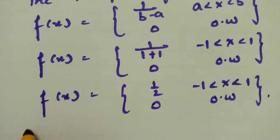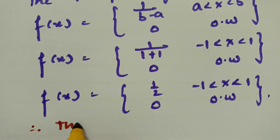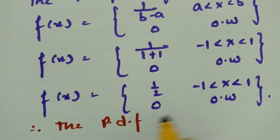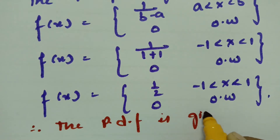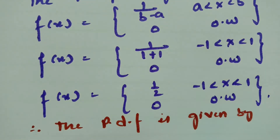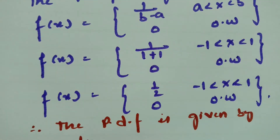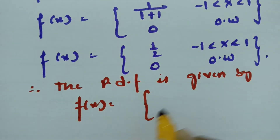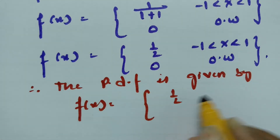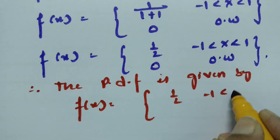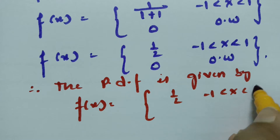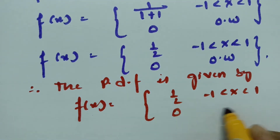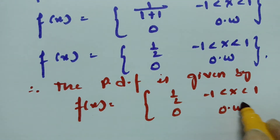Therefore the probability density function is given by: f of x equals one-half, for x lying between minus 1 and 1, and 0 otherwise.